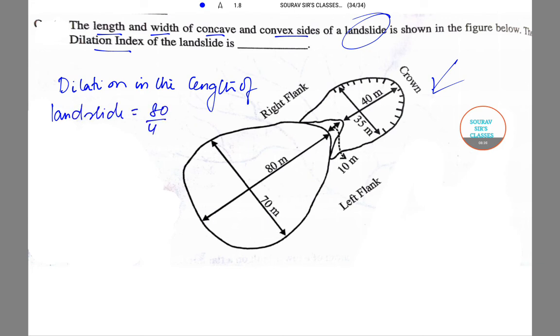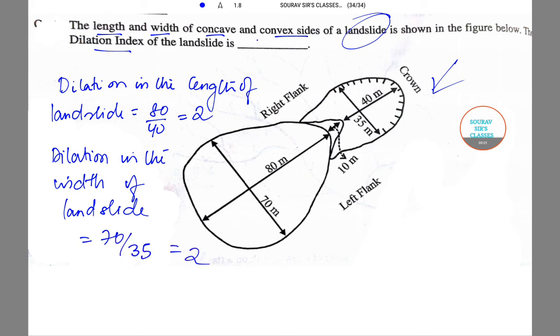The dilation in the width of landslide is 70/35, which equals 2. Hence the dilation index itself becomes 2.